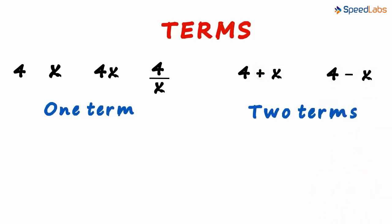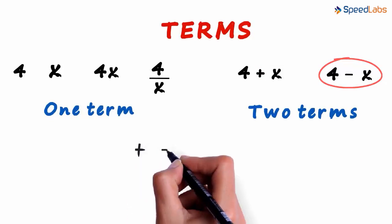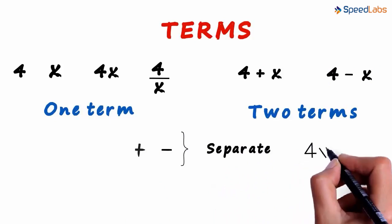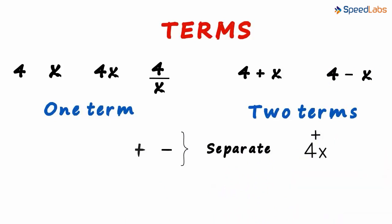What about 4 minus x? This also has two terms. What does this mean? It means that plus and minus separate the terms. If we have a plus sign over 4 and x, it will just separate the terms like this. Or even if we had a minus sign over 4 and x, it will separate the terms.